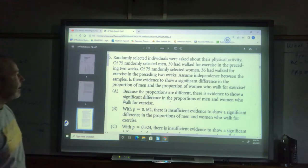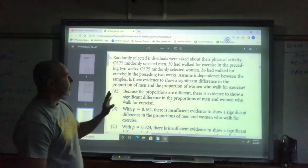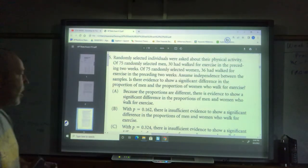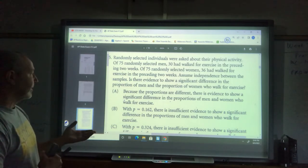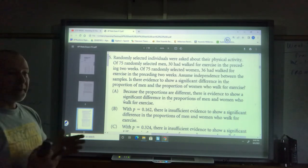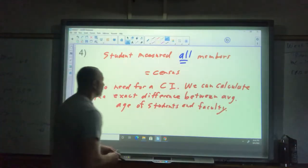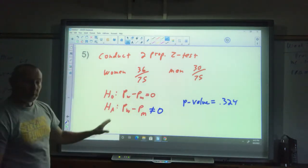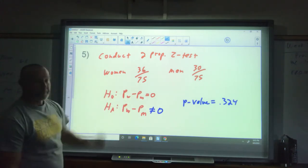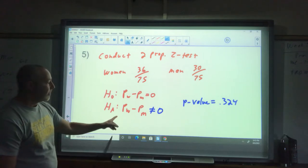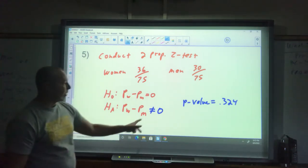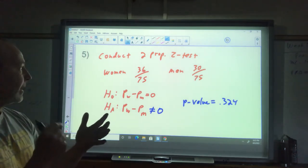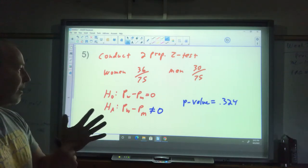Last one, number five. Randomly selected individuals asked about physical activity. 30 of the 75 men had walked, and 36 of the women had walked, and it says assume independence between the samples. That means we can do our statistics on it. Is there evidence to show a significant difference in the proportion of men and women who walk for exercise? We would just do a two-proportion Z-test. We'd conduct a two-proportion Z-test. Here's the facts for the women and the men. Our null would be that there's no difference between the women minus the men. Notice the women are first because they have a higher value. Be careful because it doesn't say that the women are higher. It asks if there's a difference, so that would be not equal to. If you do a two-proportion Z-test, put in the women, 36 out of 75, and the men, 30 out of 75 at a 95% level, you'll get a p-value of 0.324.